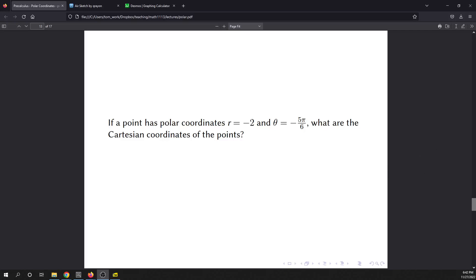All right, in this video we are going to work the following problem. It says if a point has polar coordinates of r equals negative 2 and theta equals minus 5 pi over 6, what are the Cartesian coordinates of the points?